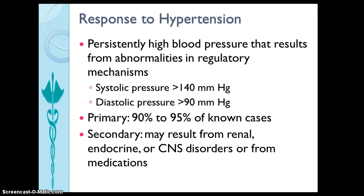Hypertension is persistently high blood pressure that results from abnormalities in regulatory mechanisms. It is usually defined as a systolic pressure above 140 mmHg or a diastolic pressure above 90 mmHg on multiple blood pressure measurements. The causes of primary hypertension, or essential hypertension, are not known.